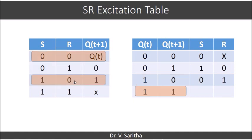The final case: Q(t) is equal to 1 and Q(t+1) is equal to 1. Again we will have two cases because both are equal. Considering these two cases, S is 0 and 1 in two different cases and R is always 0 in both cases. So we will say S is don't care and R is 0. This is how we get the SR excitation table.